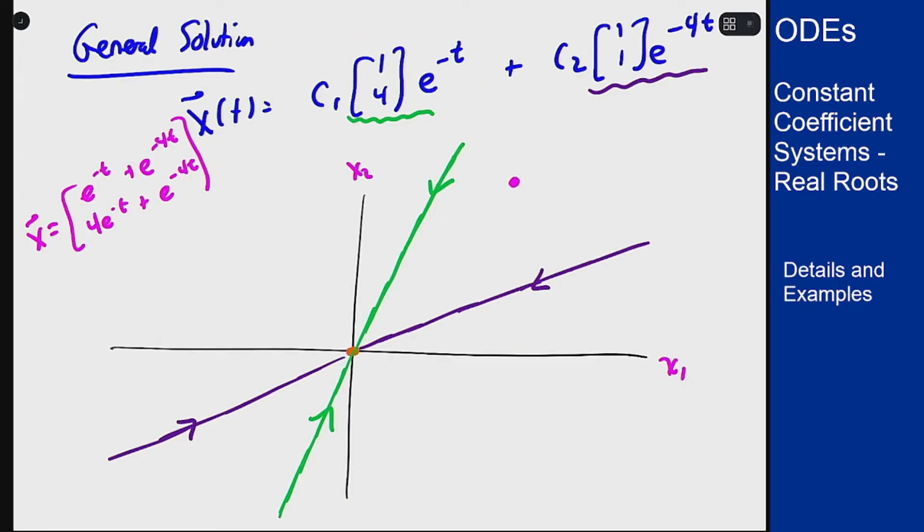The graph is going to look something like this, it's going to come in and approach the origin along this line there.